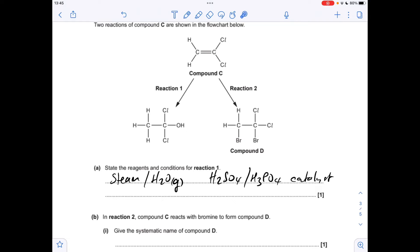So the trick with this is just getting the numbers right. So if we name it this way, we get 1, 2, dibromo, 2, 2, dichloroethane.